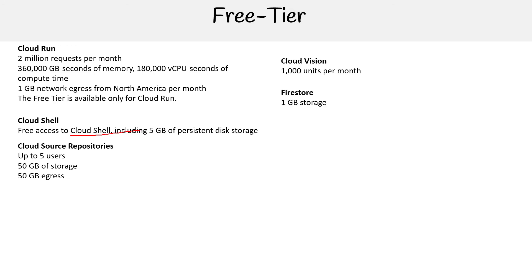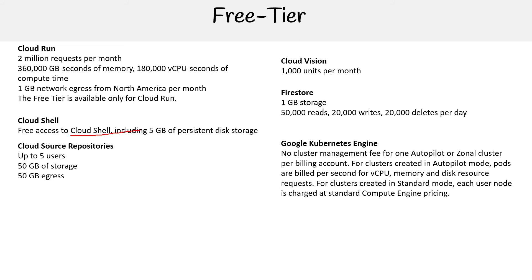For Cloud Vision, you get 1,000 units per month. For Firestore, you get one gigabyte of storage, 50,000 reads, 20,000 writes, and 20,000 deletes per day. For Google Kubernetes Engine, there is no cluster management fee — that's a big one, because other providers will charge you a management fee for the cluster control plane. For autopilot or zonal clusters, pods are billed per second for vCPU, memory, and disk resource requests. For clusters in standard mode, each user node is charged at standard Compute Engine pricing.